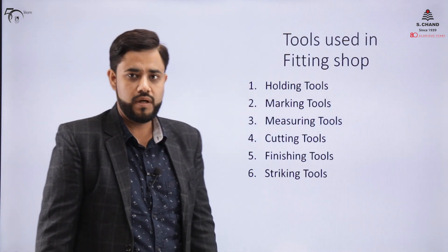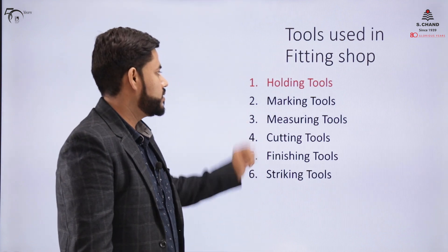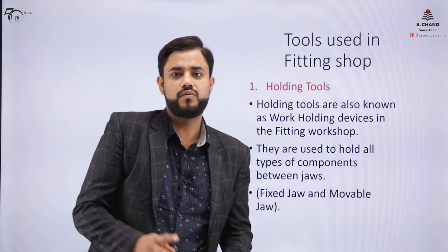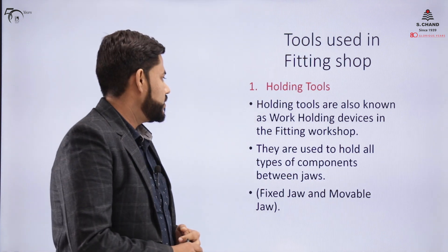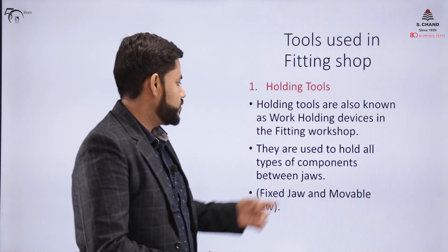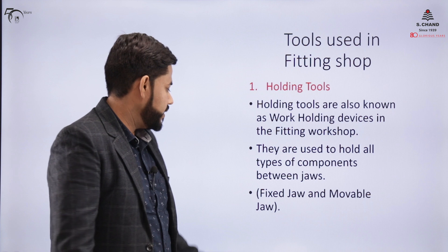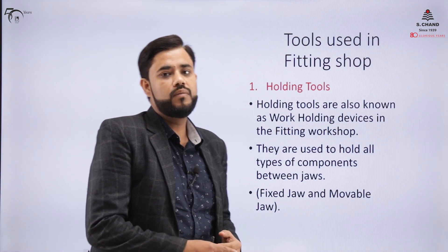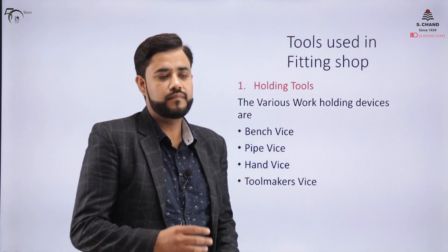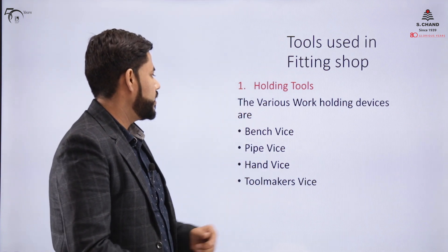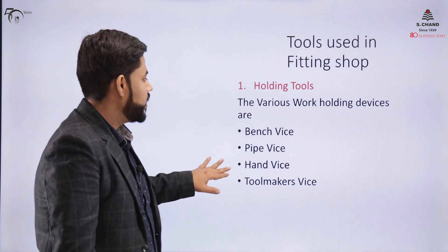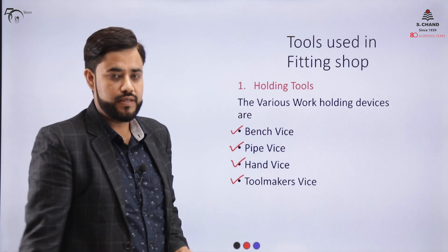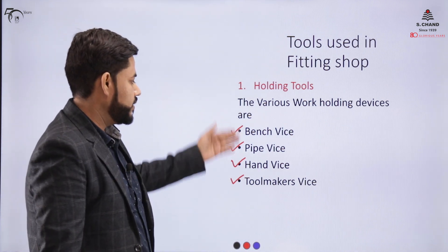We will understand all these tools one by one. Starting with the holding tools — as the name suggests, these are workpiece holding devices used to hold components between jaws. One jaw is fixed and the other is a movable jaw. The classification of work holding tools includes the bench vise, pipe vise, hand vise, and tool maker's vise.